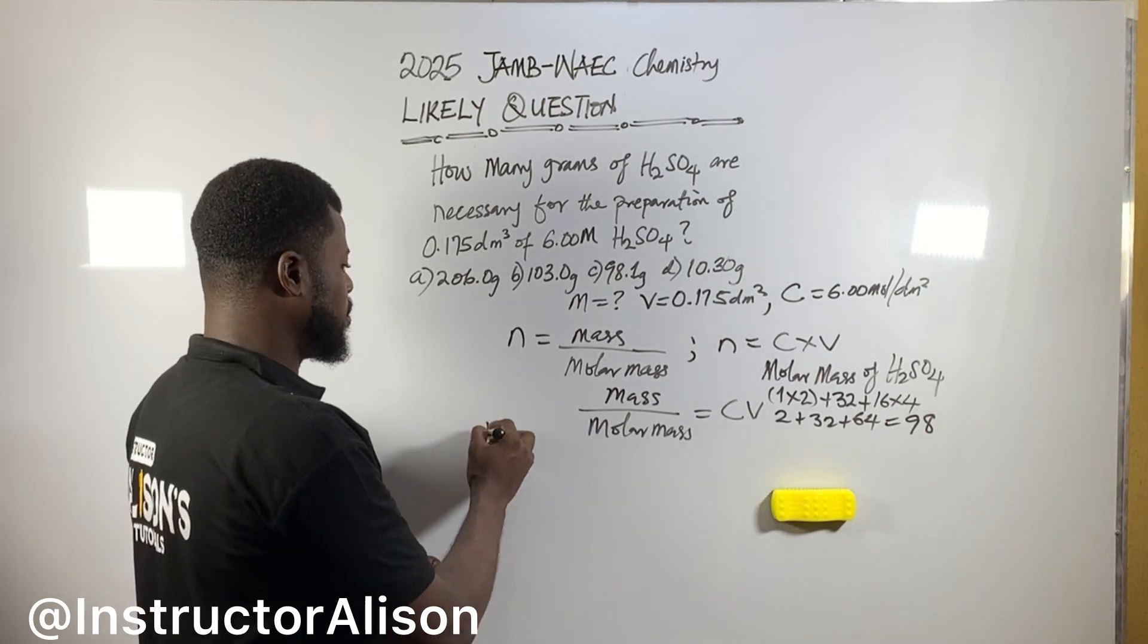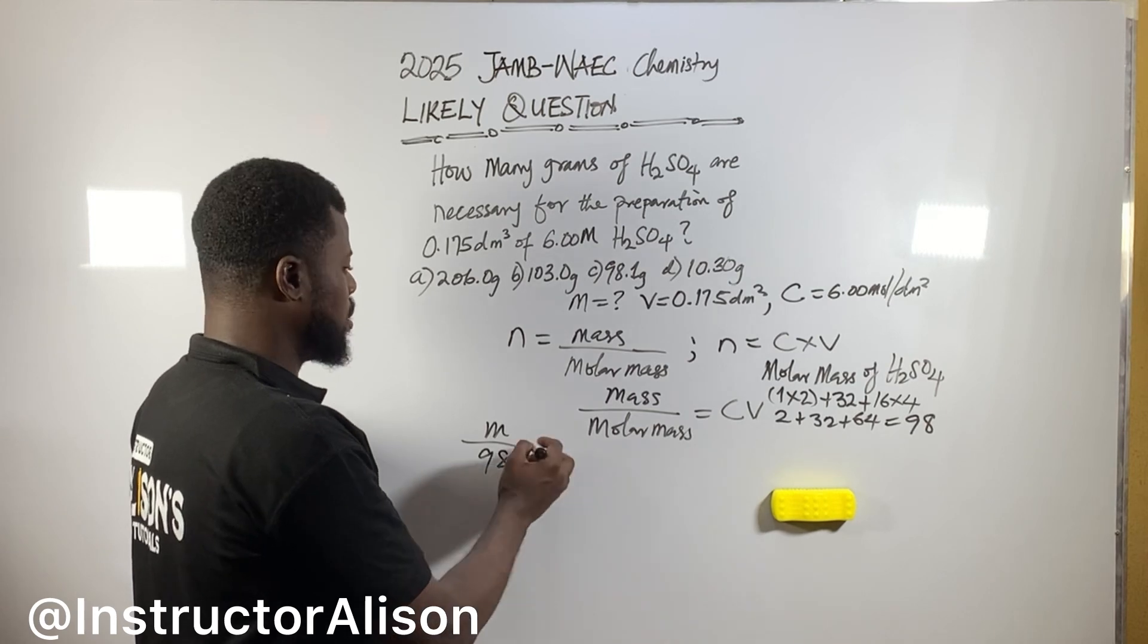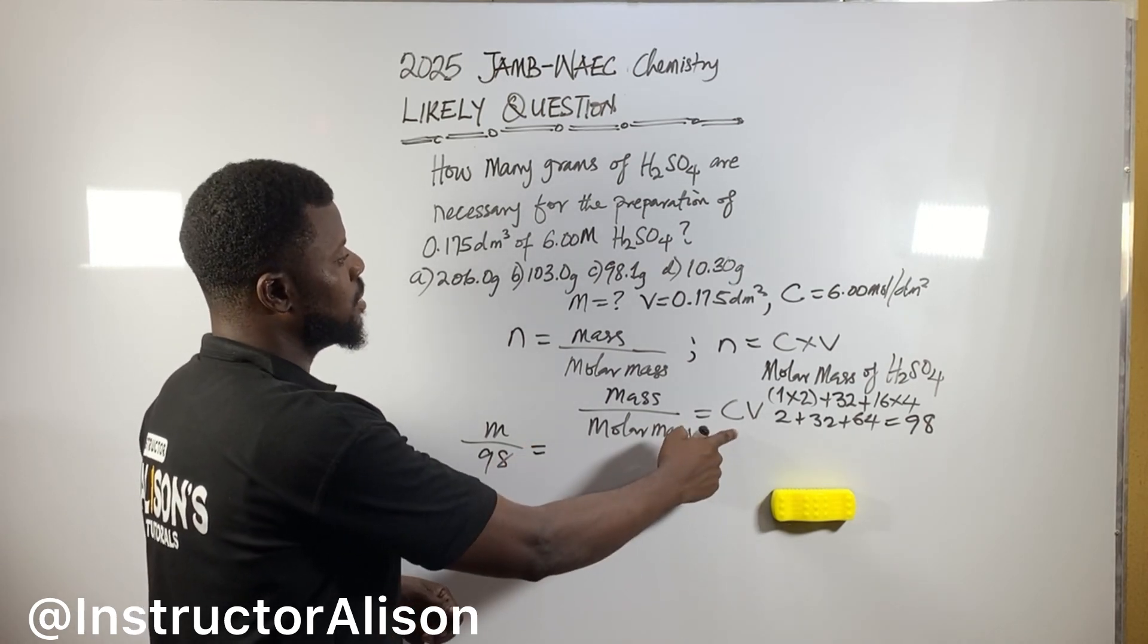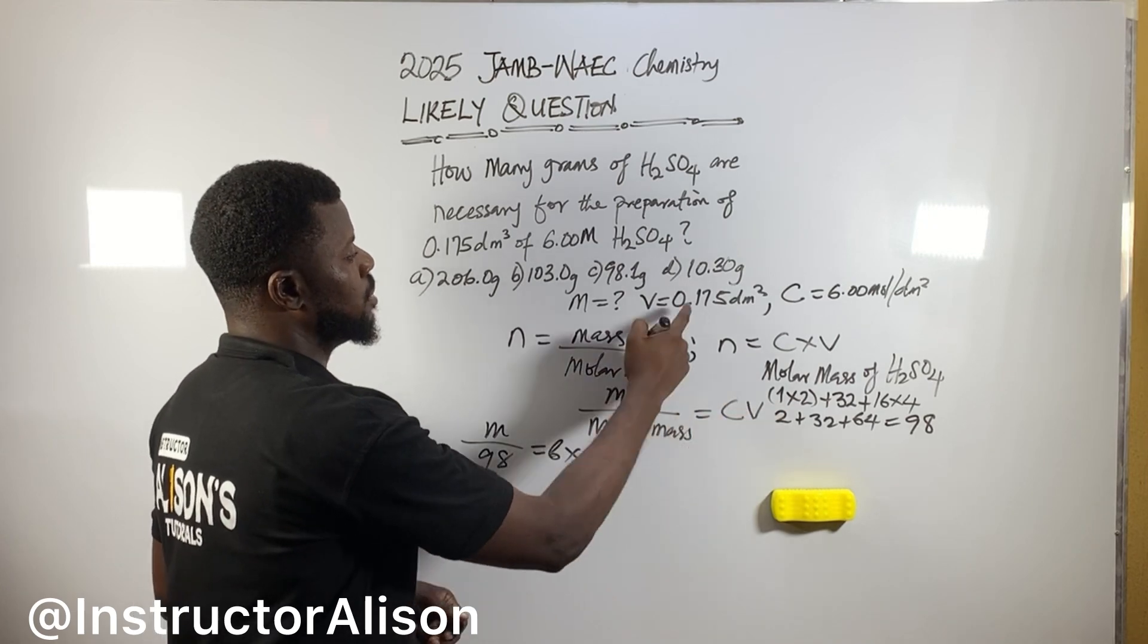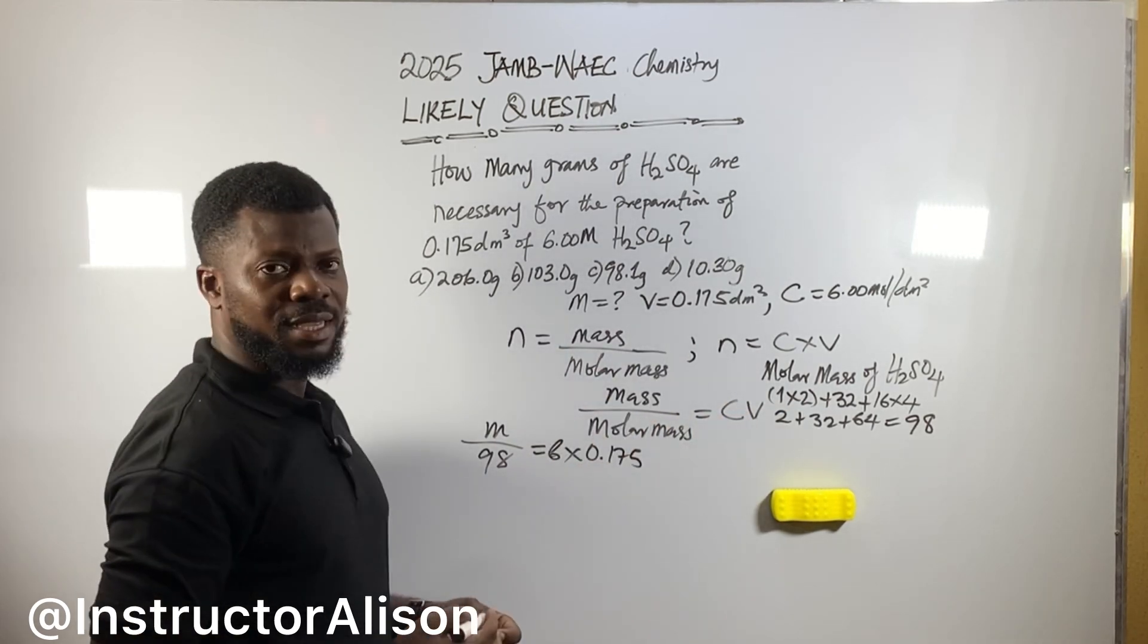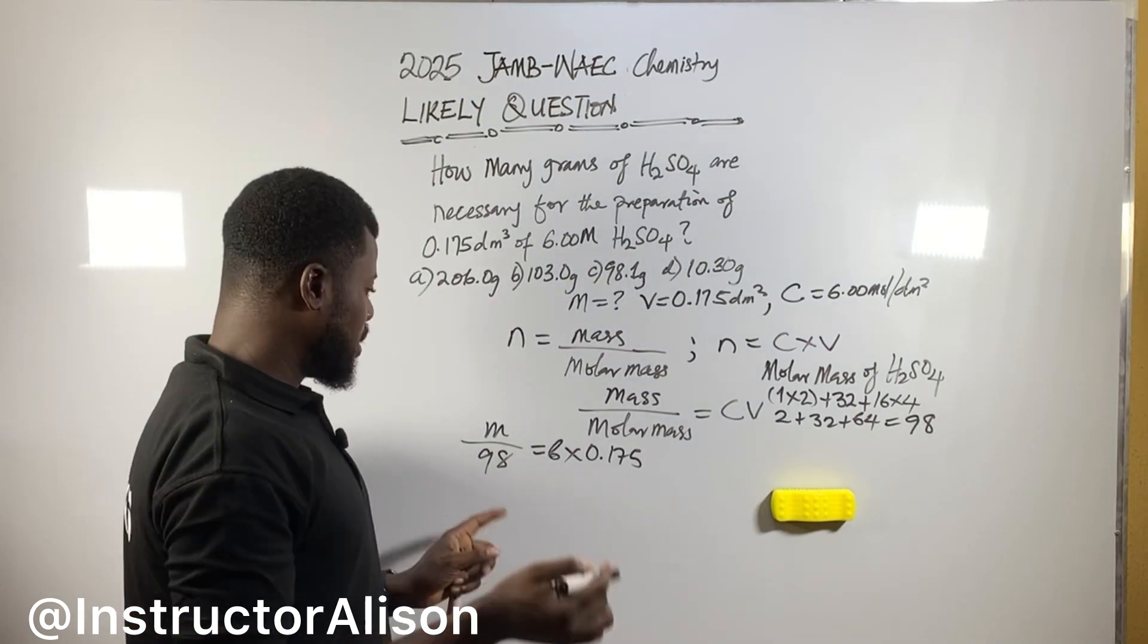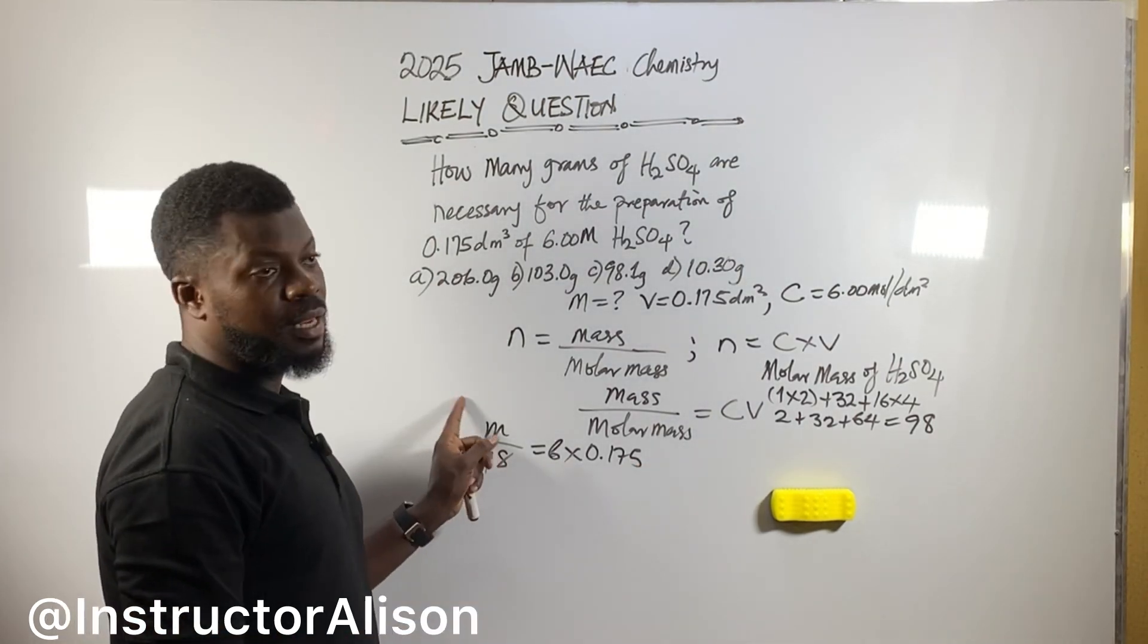So, conclusively, mass over 98 for this molar mass equal to 6 times V, which is 0.175. This is how they make life easier. Now, carry this guy, come multiply. Multiply everything. Anything we give me now is the mass.